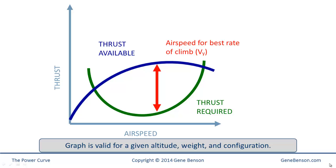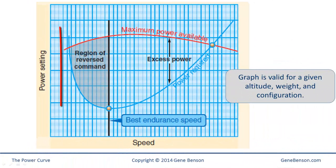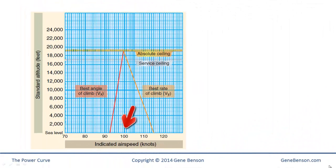The airplane climbs because of excess thrust. The greater the distance between the curves, the more excess thrust we have and the greater the rate of climb. This explains why rate of climb decreases as altitude increases — the thrust available is decreasing because the engine is producing less power. Flying in the region of reverse command is typically called being behind the power curve, which simply means that more power is required to maintain level flight at slower airspeeds. Note the considerable difference between airspeeds for best angle and best rate of climb at low altitudes where go-arounds occur.